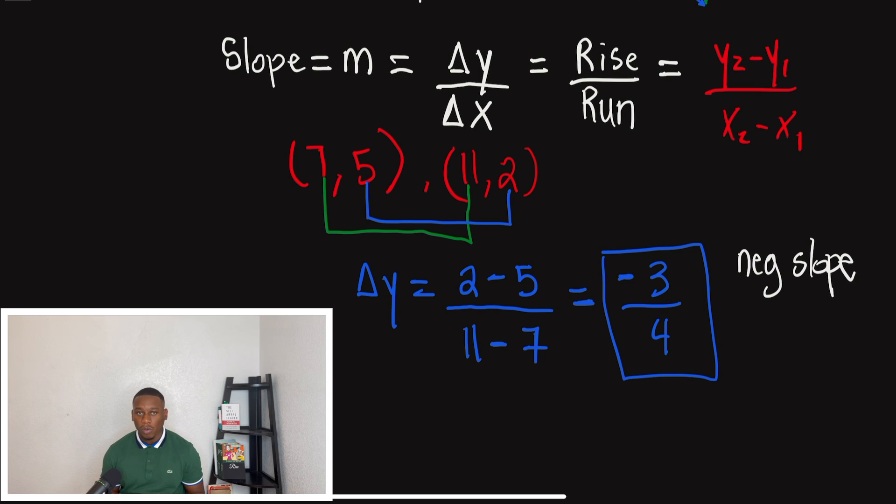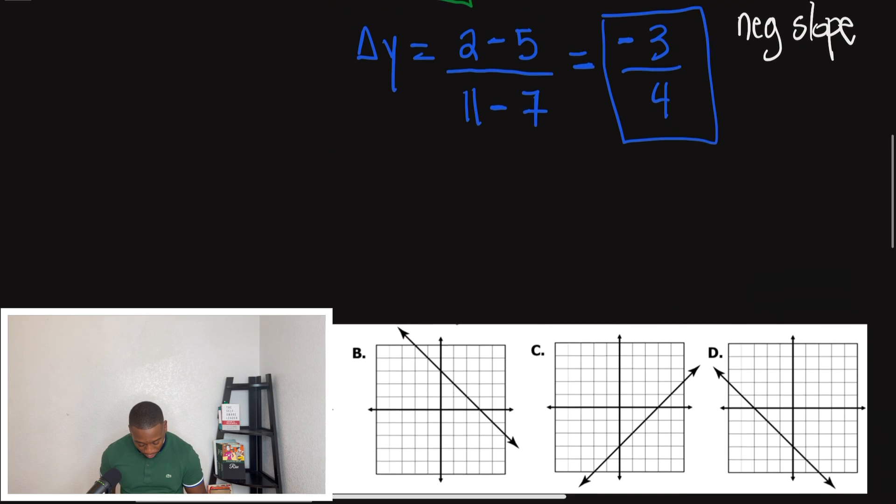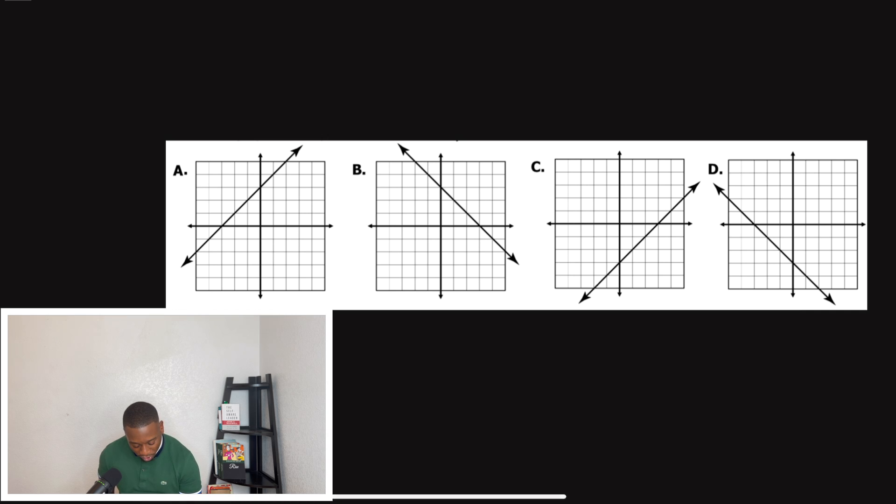But before we wrap this video up, I want to go through some problems real quick so that we can actually apply this small lesson. So when we scroll down here, I'm just going to write the words in. We look at A. So as we look at A, we are going up the stairs when we follow this line from left to right. So A will be considered a positive slope. Doesn't matter where on the graph it is. As long as that line is slanting upwards from left to right, it's a positive slope.